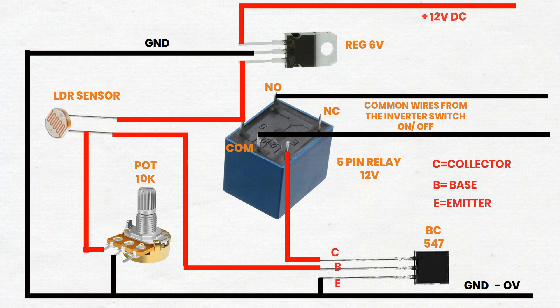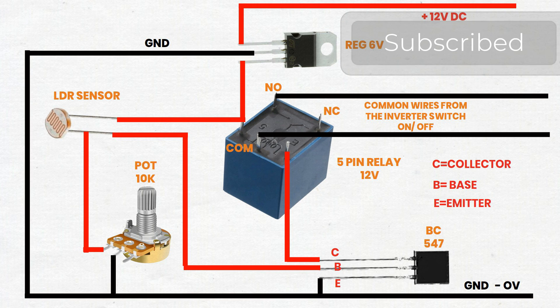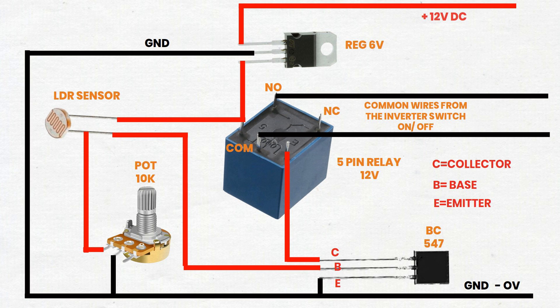By following these steps, you should be able to create a working LDR circuit that uses a relay, transistor, voltage regulator, and potentiometer to control a load based on light intensity.